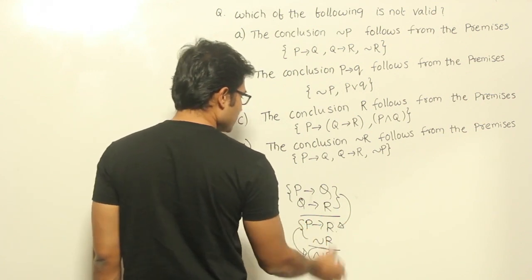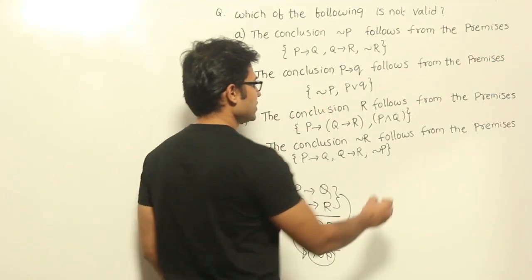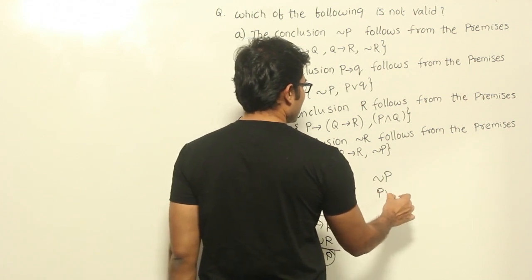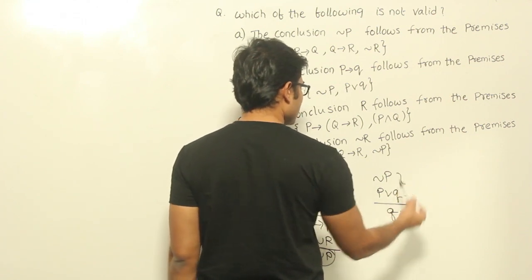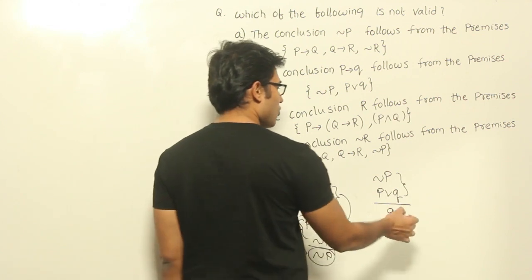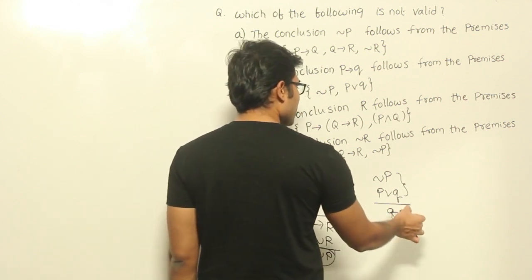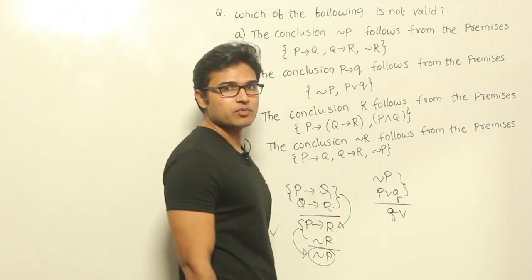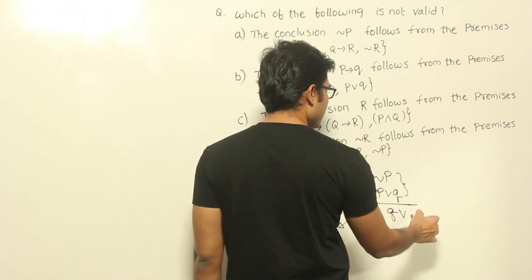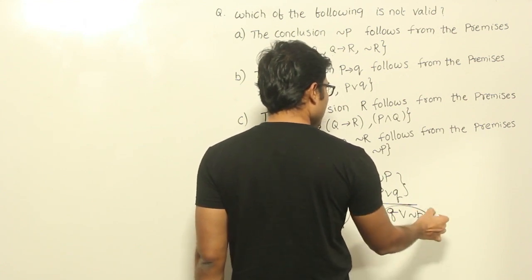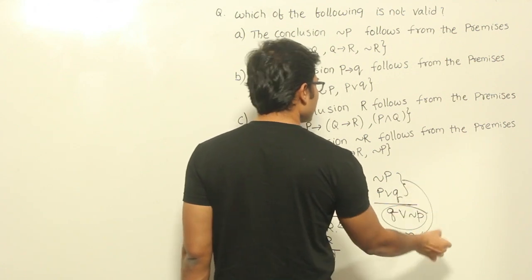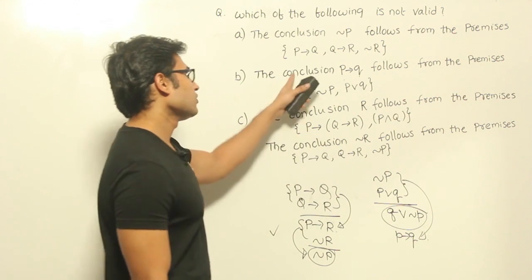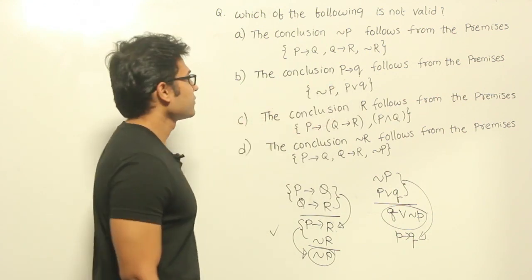Now given premises negation P and P or Q, we can derive Q by using disjunctive syllogism. Whenever Q is true, by the addition rule we can add anything to it — so we can add negation P. If we add negation P, that gives us P implies Q. Therefore we can definitely derive this conclusion, and since we are able to conclude this, it is valid.